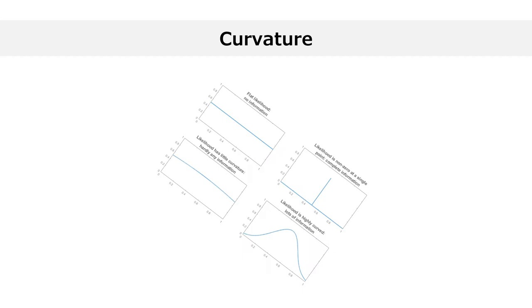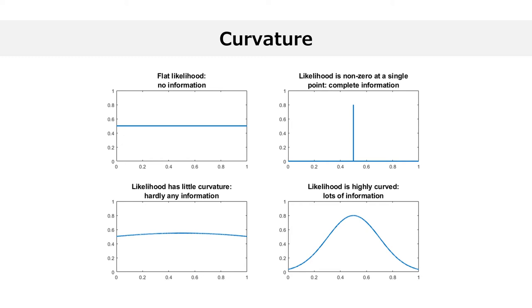The two extreme cases are depicted in the two upper plots. In these plots, the values of theta are on the x-axis and the likelihoods are on the y-axis. In the left one, the likelihood is flat — all the parameters are equally likely to have generated the data, so the data provides no information about the parameter. In the right one, the likelihood is non-zero at a single point — there is only one parameter that could have generated the data, so the data provides complete information. The lower plots display two intermediate cases.